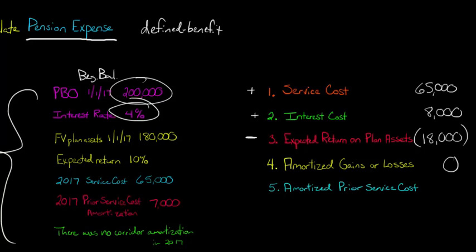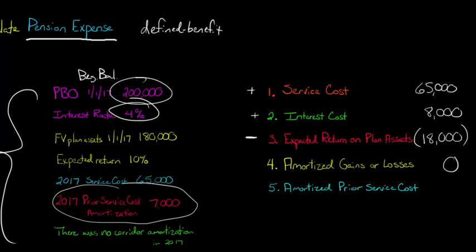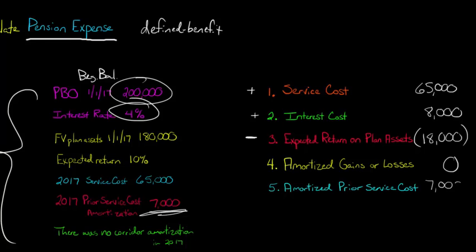The fifth component is prior service costs. That occurs when you amend the plan to change prior benefits — for example, if an employee worked 15 years and you grant them credit for 18 years to give them extra benefits. For this firm in 2017, they granted some prior service costs, which are amortized straight-line over time. That amortization comes out to $7,000, which increases our pension expense.